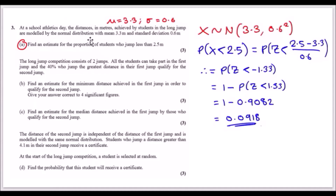We want P(X < 2.5). Using standard procedure, convert to Z-form: Z = (2.5 − 3.3) / 0.6, which gives −1.33. Since the table uses less-than form but has no negative values, we take the negative sign out and write 1 − P(Z < 1.33).